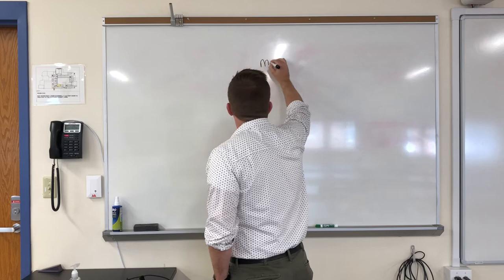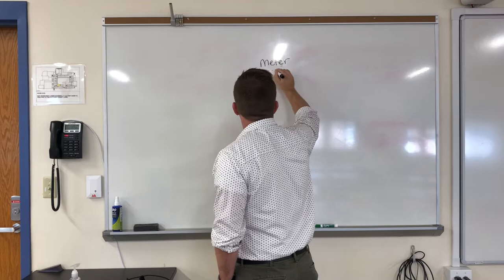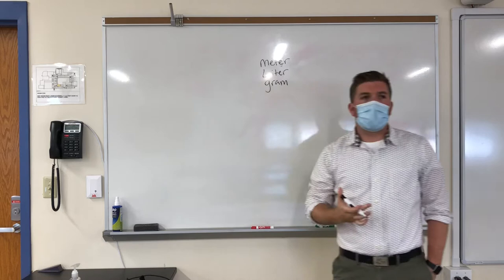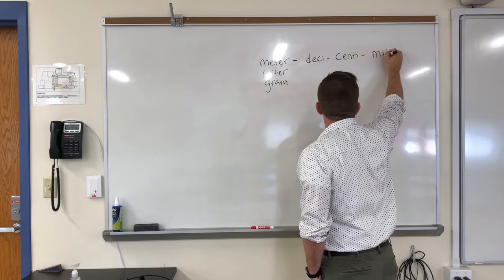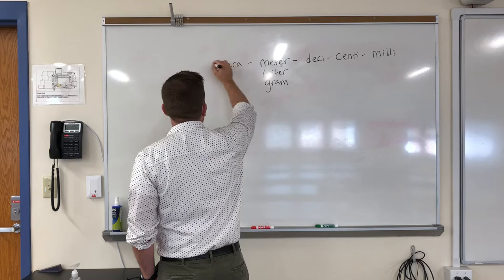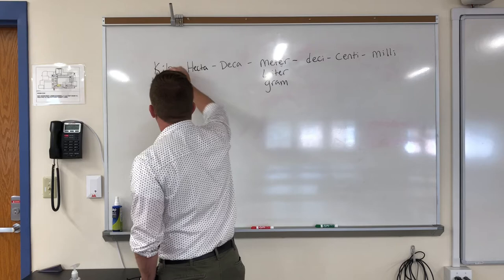As we discussed in class, there are three standard units: the meter, the liter, and the gram. Everything we do when we convert comes off of these units. If I get smaller I go deci, centi, and then milli. And if I get larger I go deca, hecto, and finally kilo.